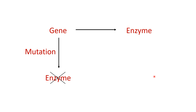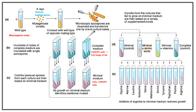Wild type Neurospora crassa has the ability to grow on minimal medium containing salts only. Individual conidia — the asexual haploid spores — are exposed to X-rays to induce mutations in them. These mutagenized spores are then grown on complete medium, which contains carbon, hydrogen, oxygen, phosphorus, and sulfur salts, as well as a full range of amino acids.